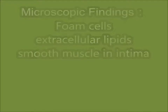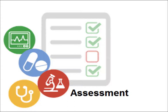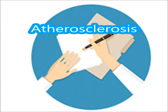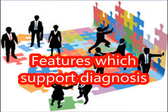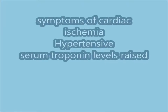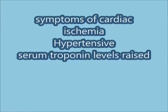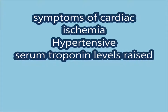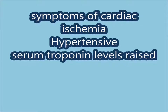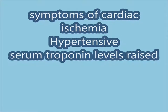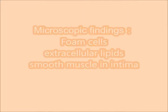Foam cells, extracellular lipid, and smooth muscle cells in the intima are the microscopic findings. The diagnosis is atherosclerosis. Supporting evidence includes the name of the lesion and features which support the diagnosis, as the patient presents with symptoms of cardiac ischemia — chest pain radiating to the left arm. These patients are typically hypertensive and show raised troponin levels in their blood.